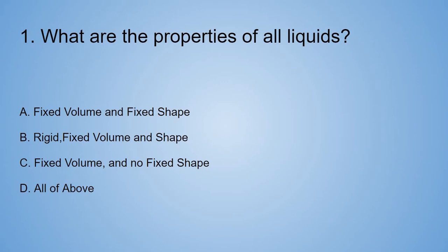Number 1. What are the properties of all liquids? A. Fixed volume and fixed shape. B. Fixed volume and fixed shape. C. Fixed volume and no fixed shape. D. All of the above. Remember, this is for all liquids.